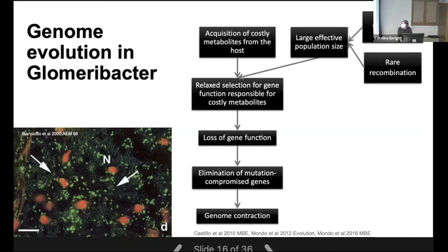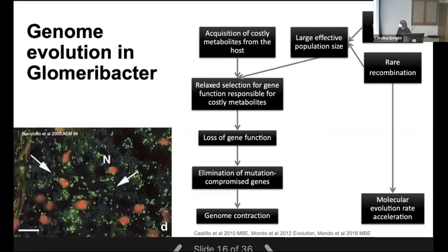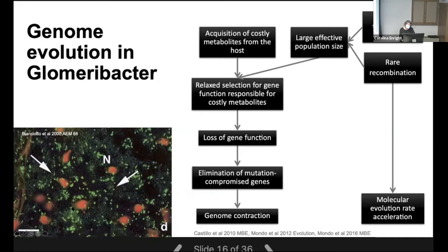Genome reduction in Glomeribacter is adaptive: only genes encoding costly metabolites obtainable from the fungus were lost, and the genome contracted adaptively. The slightly elongated branch length we observe is associated with rare recombination — if you have very low recombination, you swap large chunks of genome, adding branch length with each recombination event. This figure from Paola Bonfante shows red fungal nuclei and green specks of Glomeribacter cells.